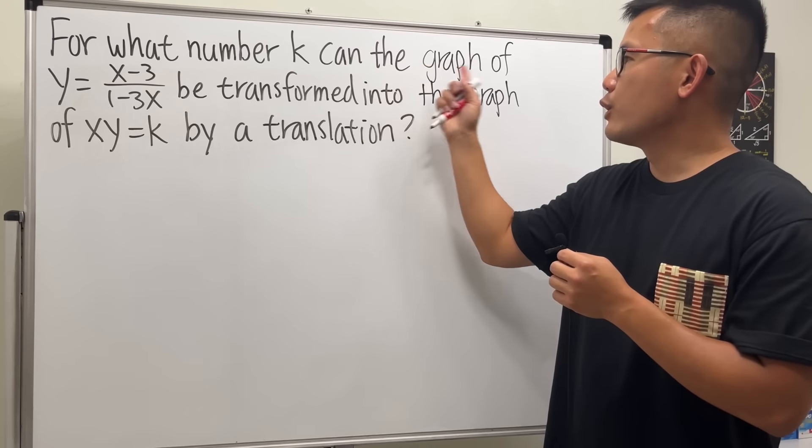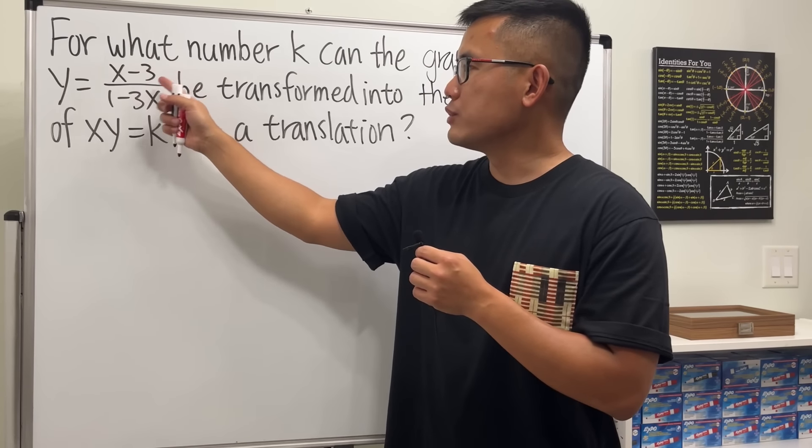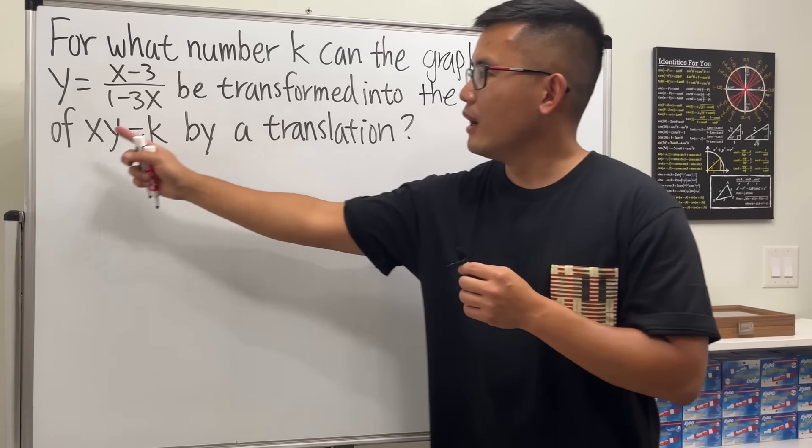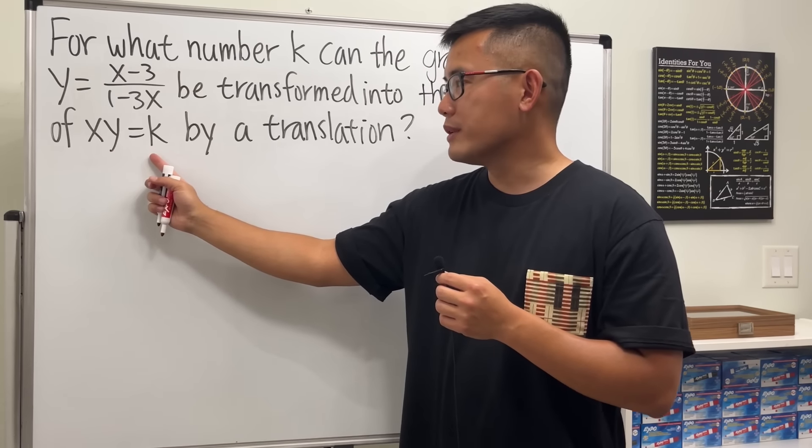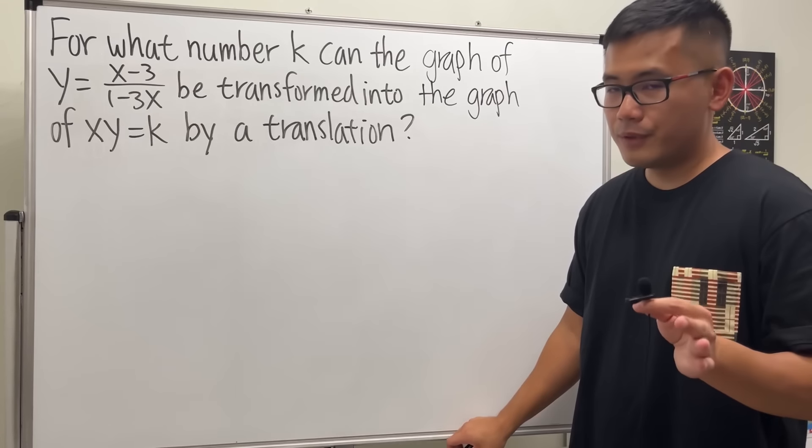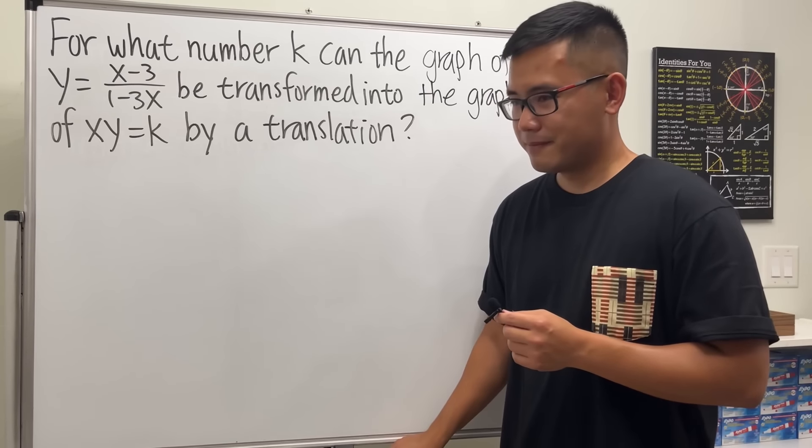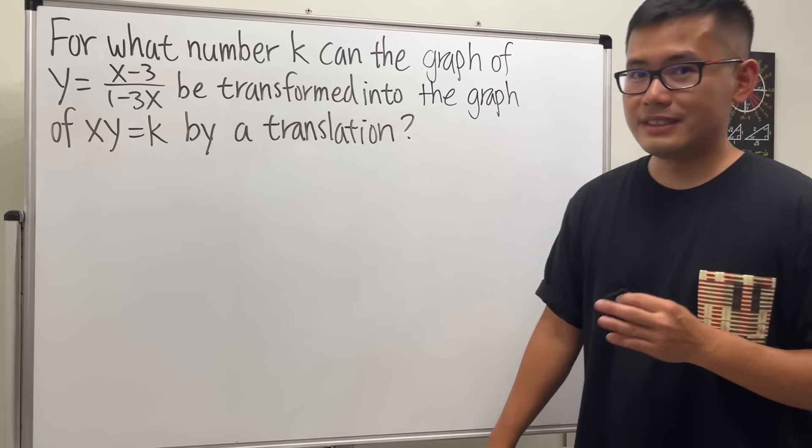For what number k can the graph of y equals (x minus 3) over (1 minus 3x) be transformed into the graph of xy equals k by a translation? You know the deal. Please pause the video and try this first. Done? Okay.